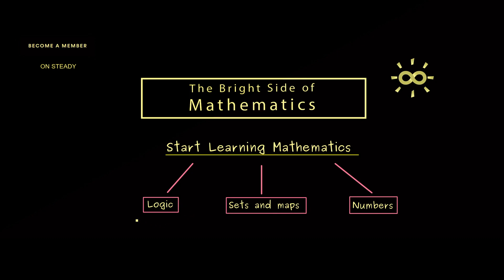We start with some basic logic which is of course important because we need to know what, for example, a proof is. Afterwards we then can talk about the basic building blocks of the mathematical world which is given by sets and maps. And with that we are able to define all the different numbers we need.